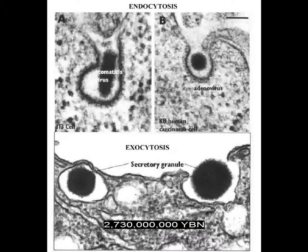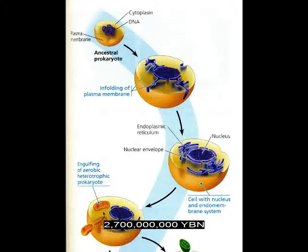Endo- and exocytosis evolve — cells can now eat other cells. In endocytosis, the plasma membrane folds inward to bring substances into the cell. In exocytosis, substances contained in vesicles are released from the cell. Eukaryotic cell — the first cell with a nucleus, the first protist. The nucleus may develop from the infolding of the plasma membrane. In prokaryotic cells, the DNA is not membrane-enclosed, while in eukaryotic cells, most of the DNA is contained in a nucleus. Eukaryotic cells are generally much larger than prokaryotic cells.